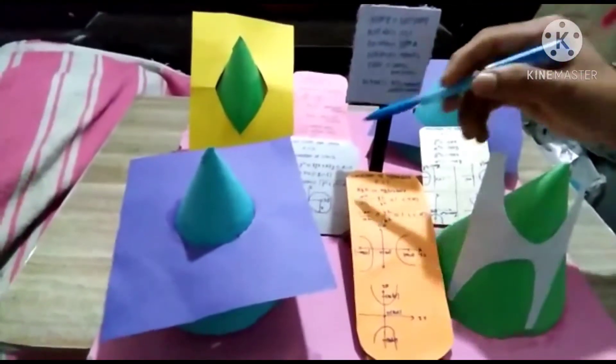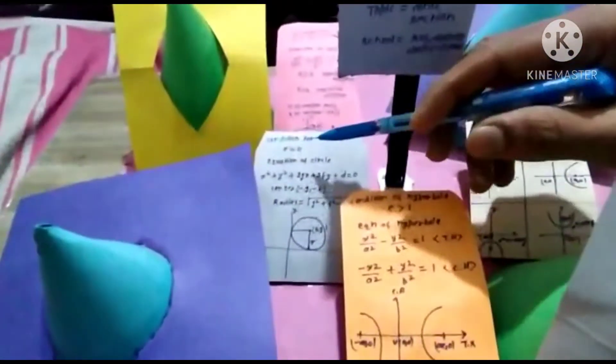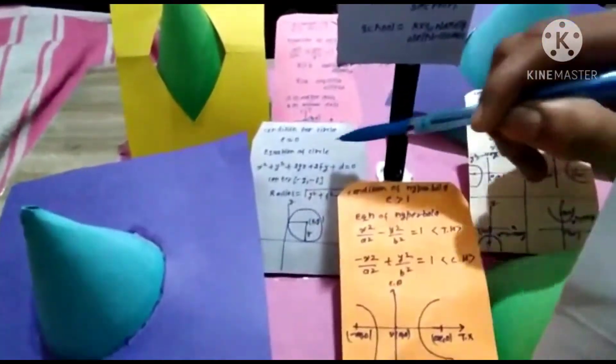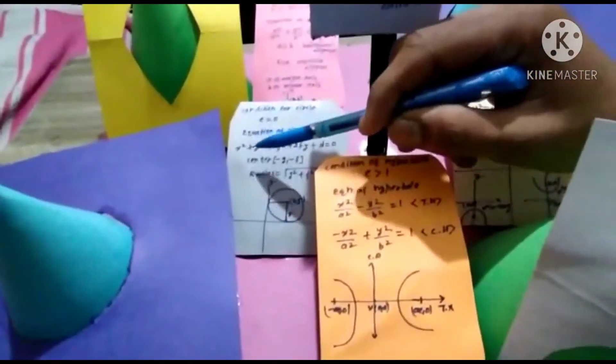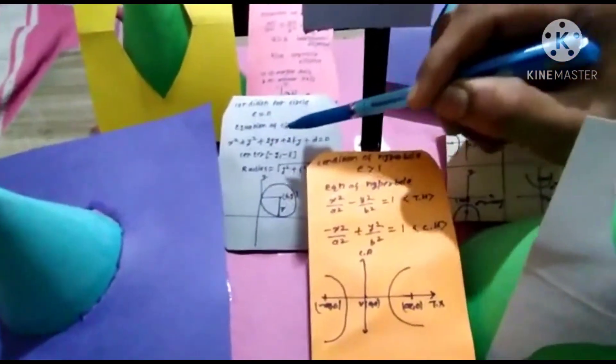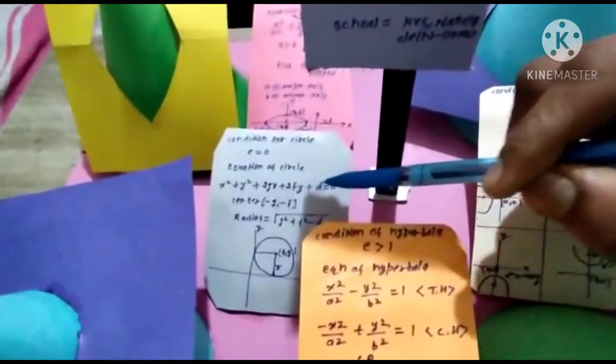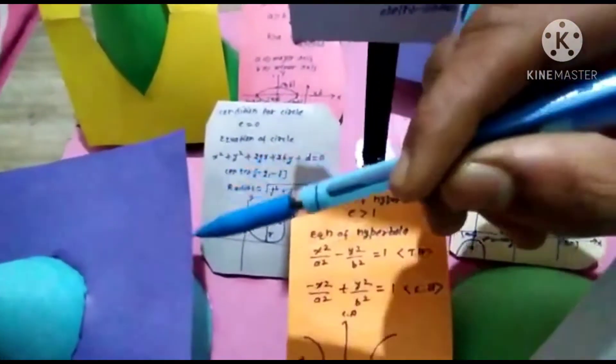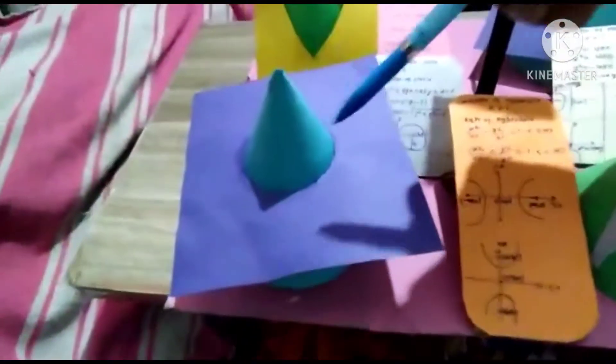First of all, we are discussing about the equation for circle. Eccentricity is equal to 0. Equation of circle is x square plus y square plus 2gx plus 2fy plus d is equal to 0. Then we make a circle.